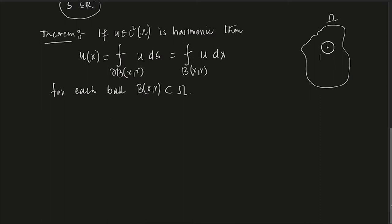Essentially, it is saying: given a harmonic function in Ω, take any point x, and if you take the average of u over any ball around that point — either over the whole ball or just the surface of the ball — that average equals u(x). Intuitively, think of u as a temperature distribution in equilibrium; the temperature at a point equals the average temperature over any surrounding neighborhood. The proof is a little technical, but I will explain every step. I am requesting you to go through the proof yourself and write it down properly.